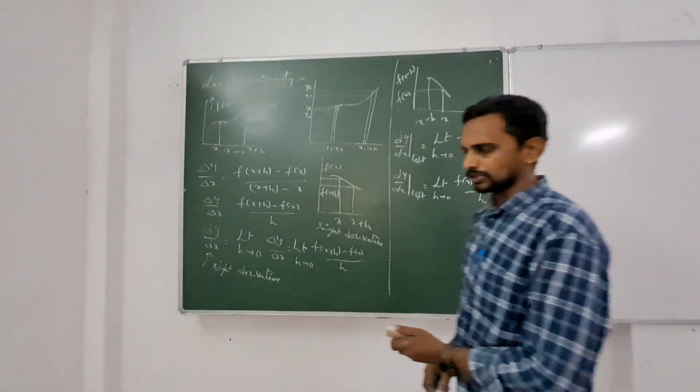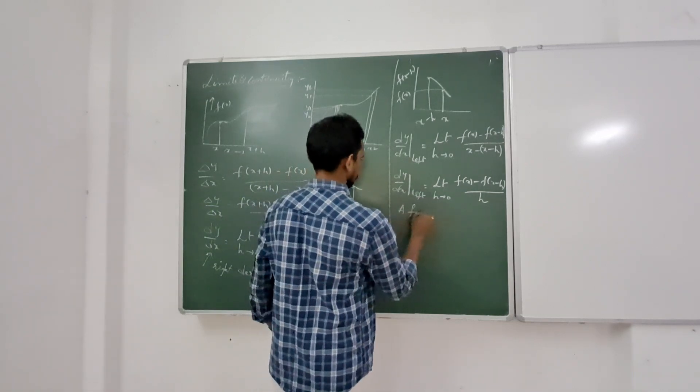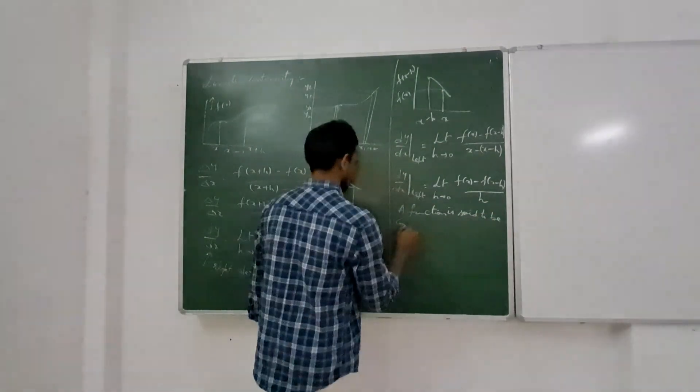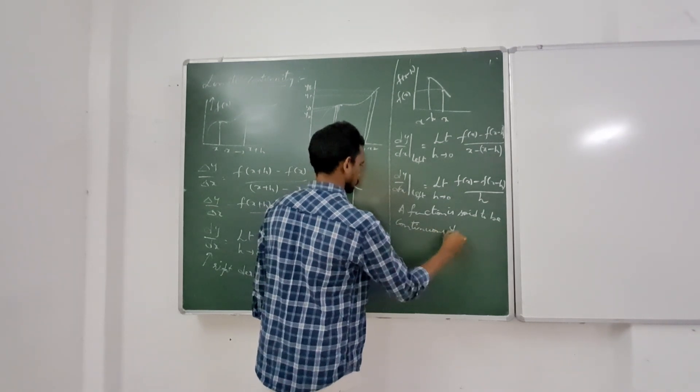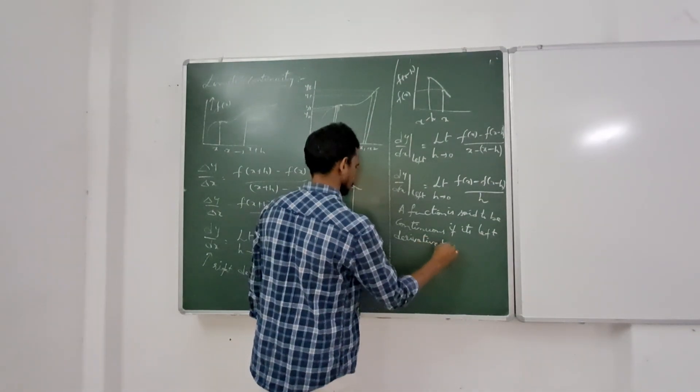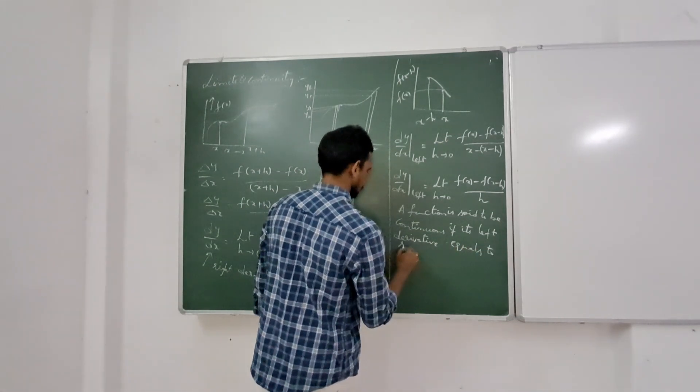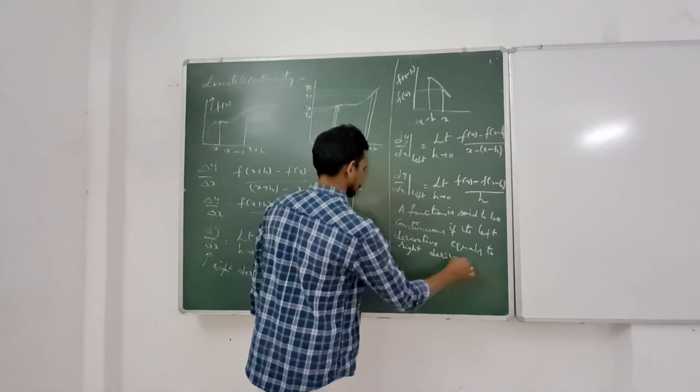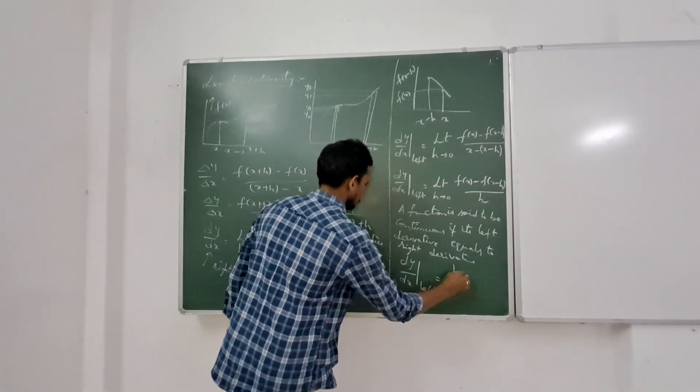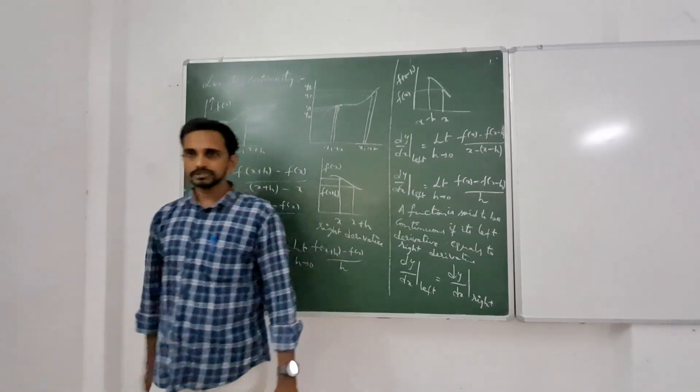Now a function is said to be continuous if its left derivative equals to right derivative. dy/dx left equal to dy/dx right, then the function is continuous.